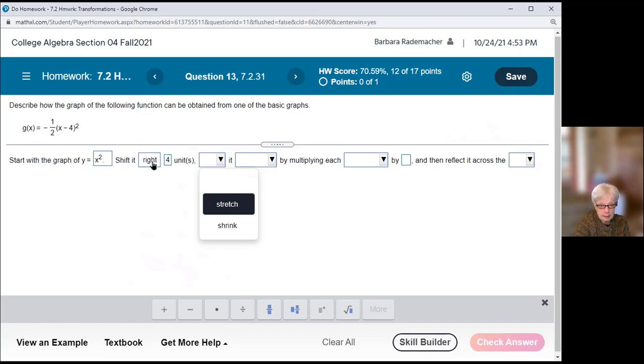Shrink it vertically by multiplying each y coordinate by one half.